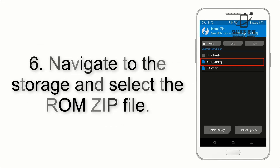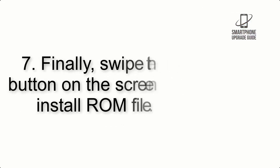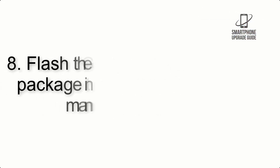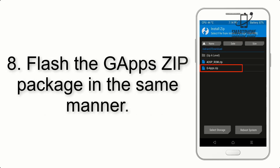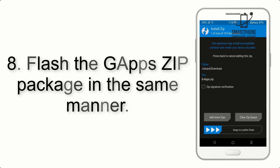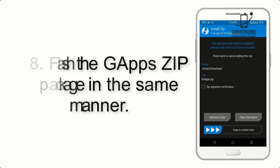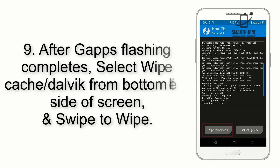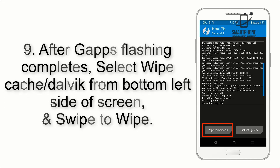Step 5: Go back to the recovery main screen and tap on the Install button. Step 6: Navigate to the storage and select the ROM zip file. Step 7: Finally, swipe the button on the screen to install the ROM file. Step 8: Flash the GApps zip package in the same manner.